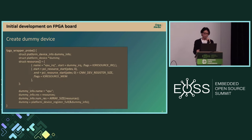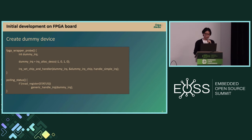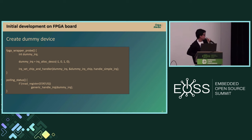Here is sample code for creating a dummy device. The key function is platform_device_register_full. You can also set a dummy IRQ and memory region in the resource structure. For the dummy IRQ, in the polling status function, just read the status register and trigger a dummy interrupt using generic_handle_irq.